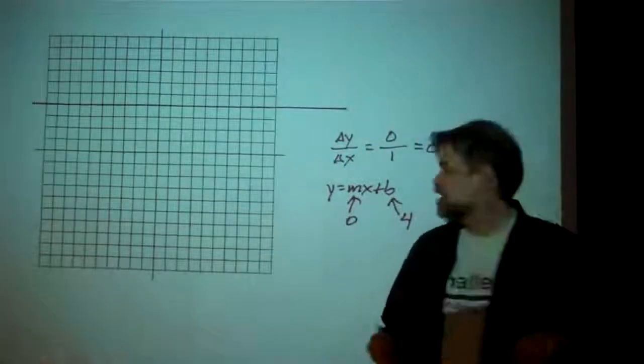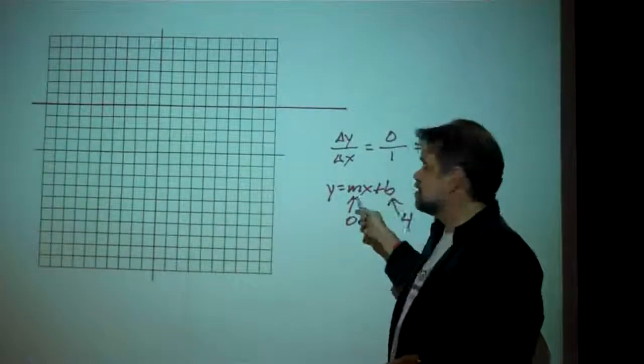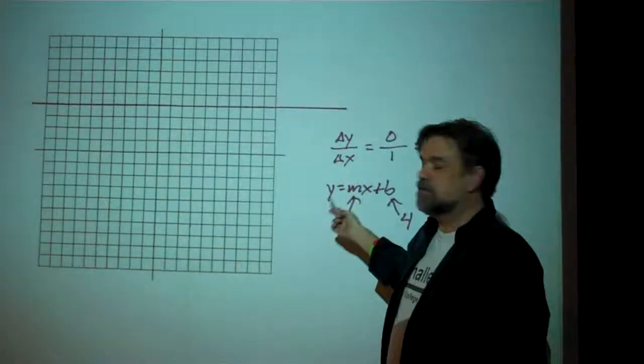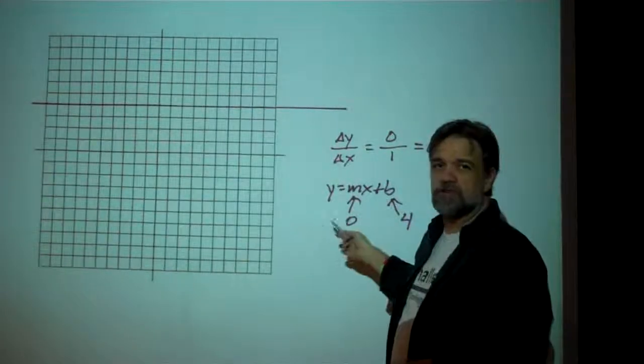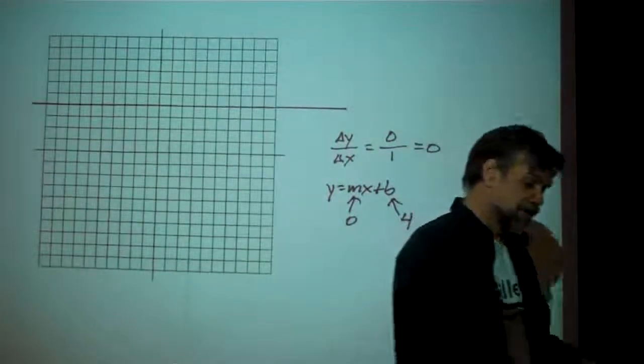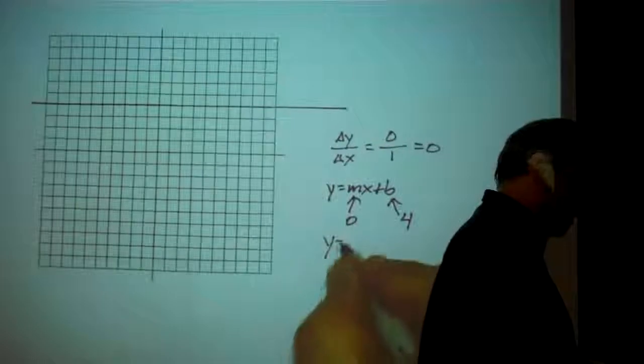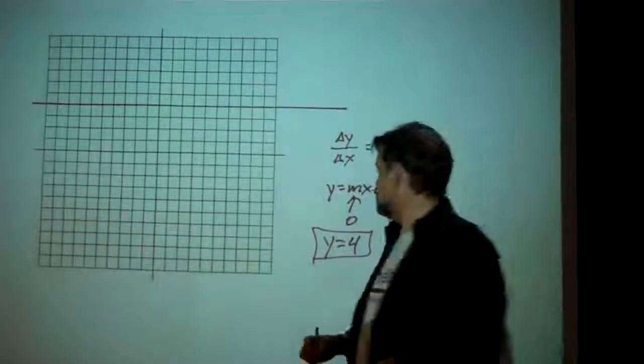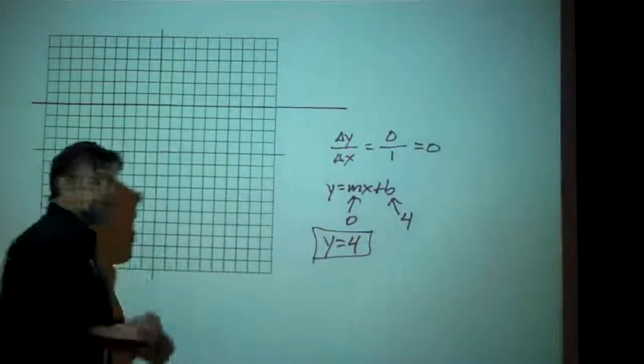So I could write y = 0x + 4. But 0 times x is just 0, and 0 plus 4 is just 4. So the whole thing boils down to y = 4. That's my equation of this line. And actually, that makes